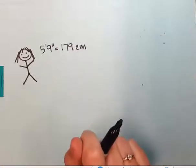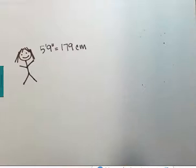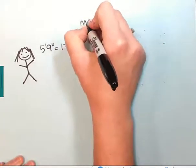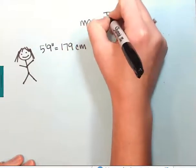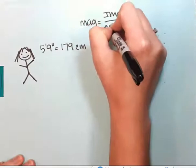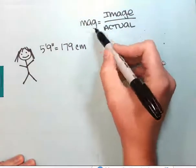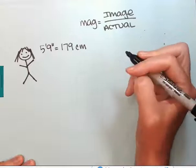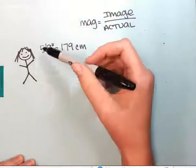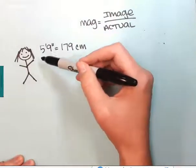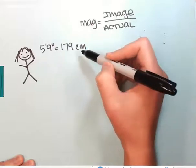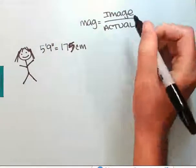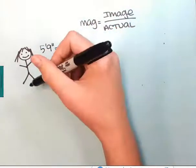Hey guys, we're back with some more calculations for you. When you're looking for magnification, remember magnification is equal to image over actual. We want to know how much bigger or smaller than the actual thing is my image. Here I have a very technical drawing of a girl who is five foot nine inches. We don't do inches in biology, we use the metric system, so if you convert that it's about 175 centimeters.